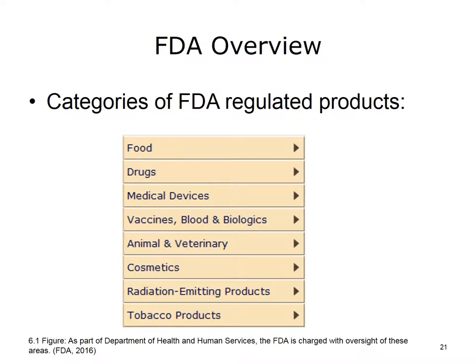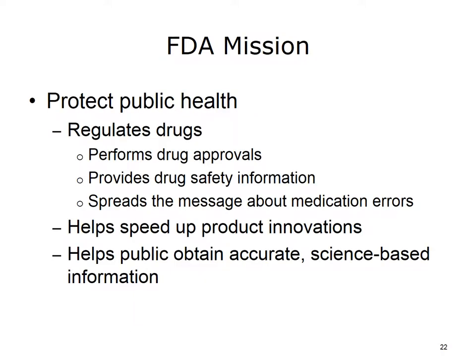The FDA is a regulatory agency that oversees the safety of eight categories of products: food, drugs, medical devices, vaccines, blood and biologic products, animal feed and veterinary drugs, cosmetics, radiation-emitting products, and tobacco products. The FDA regulates drugs by performing drug approvals, providing drug safety information, and alerting the public to actual and potential medication errors. It also helps drug and medical device companies speed up development of new products, and helps Americans get accurate information to use medicines, devices, and foods to improve their health.